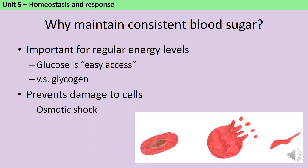The glucose dissolved in the blood plasma is easy for cells to access and can be immediately respired, whereas the huge complex molecule glycogen, which is used to store glucose in your liver and muscle cells, needs breaking down before it can be used. If blood sugar levels aren't controlled then you can feel incredibly tired because your cells can't respire as much as they need to, and this is actually one of the diagnostic criteria for type 1 diabetes.